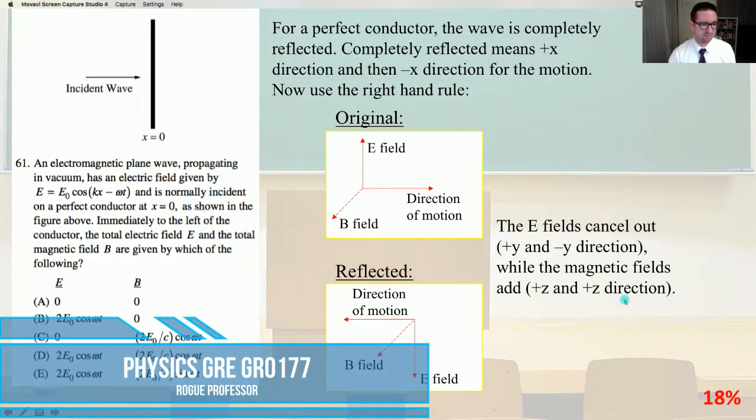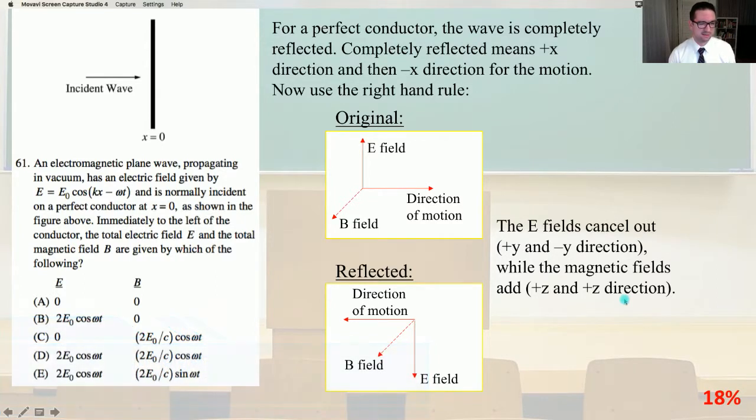An electromagnetic plane wave propagating in vacuum has an electric field given by E equals E₀ cosine (kx - ωt) and is normally incident on a perfect conductor at x equals zero, as shown in the figure above. Immediately to the left of the conductor, the total electric field E and the total magnetic field B are given by which of the following.